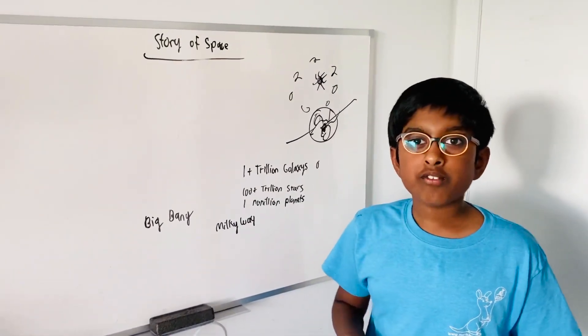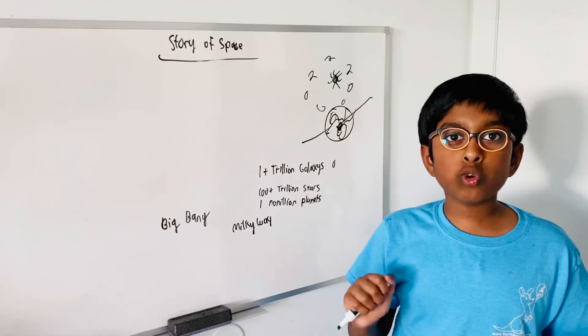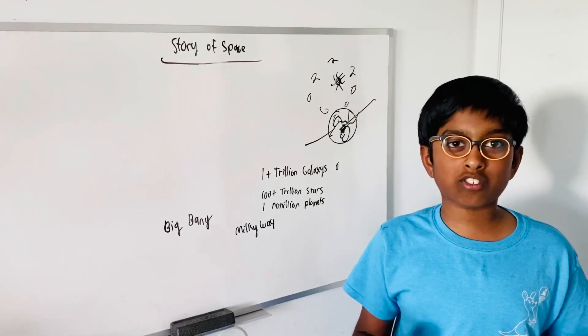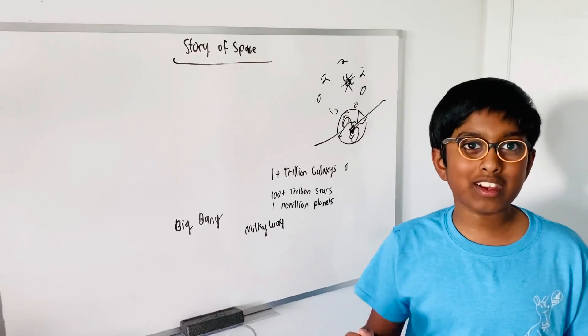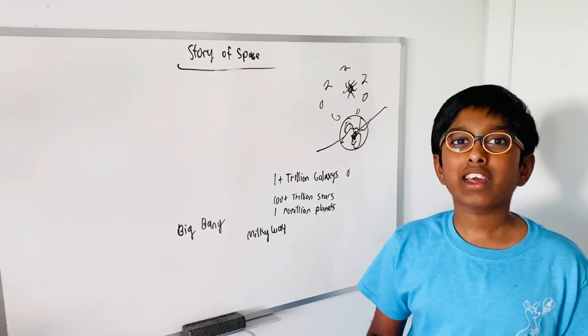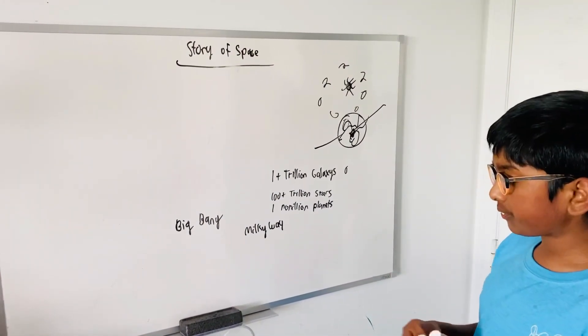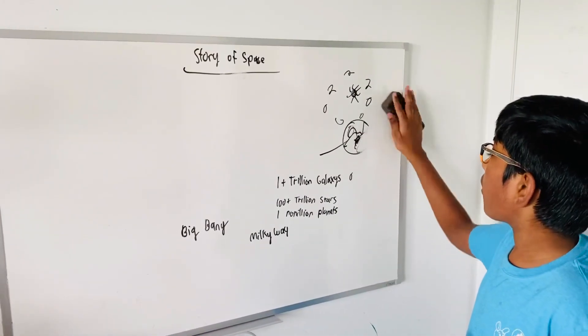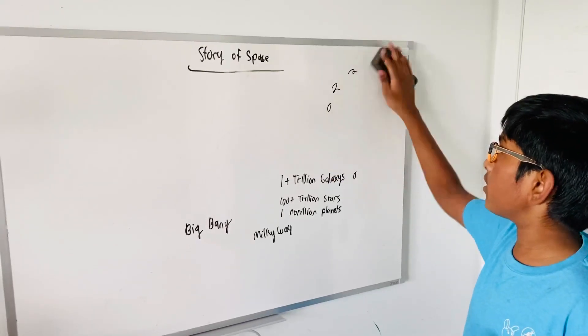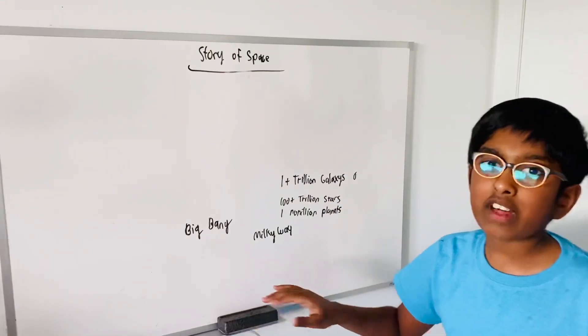By the way, Earth is in the Goldilocks zone. The Goldilocks zone is where it's not too hot nor too cold, like the Goldilocks story. It's just right. Earth is the third planet from the Sun and it's in the habitable zone. That's why we are here. That's why life exists on Earth.